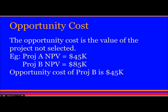Opportunity cost is the value of the project not selected. If Project A has NPV of $45,000 and Project B has NPV of $85,000, the opportunity cost of selecting Project B is $45,000 — the value we give up. The lower the opportunity cost, the better the project. Selecting Project A would mean giving up $85,000, which is not desirable, so we must consider opportunity cost before selecting a project.